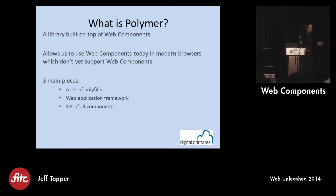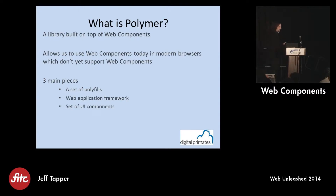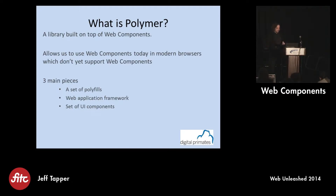Polymer — what's Polymer? It's a library that's built on top of Web Components, but also gives us polyfills and the ability to use the technologies needed for Web Components for the browsers that don't yet support it. Ultimately, there are three main pieces to Polymer: it's a series of polyfills to make sure all the evergreen browsers are able to use the technology, it's a web application framework that helps us put things together, and it's a set of UI components.